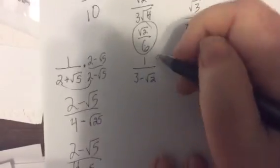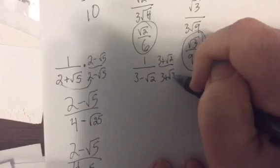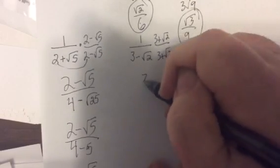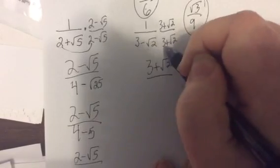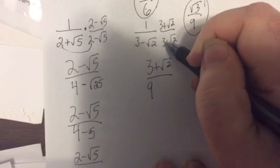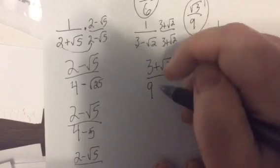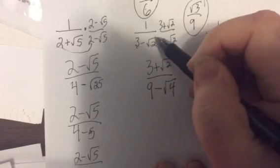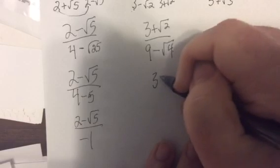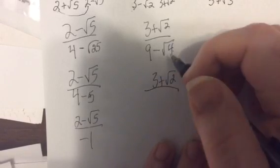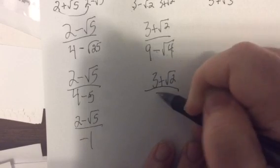So this one — 3 minus square root of 2. Just switch the middle sign, so it's 3 minus square root of 2. 3 times 3 is 9, minus 3 square root of 2 plus 3 square root of 2 — the middle stuff drops out — then minus the square root of 4, because square root of 2 times square root of 2 is square root of 4. So we have 3 minus square root of 2 over square root of 4 is 2, so 9 minus 2 is 7.